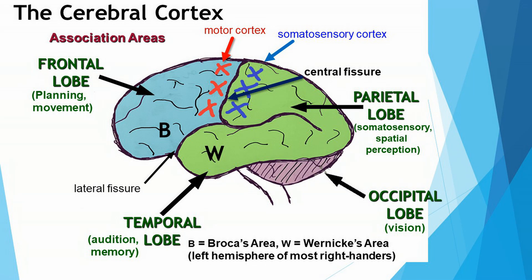This startles many students when I talk about it in class. When you're right-handed, your speech centers are very likely to be in the left hemisphere of your brain. I always get questions about what happens if you are left-handed. The answer is that the speech centers could be in your right hemisphere, or the functioning of the speech centers could be provided by both hemispheres, not just one or the other.